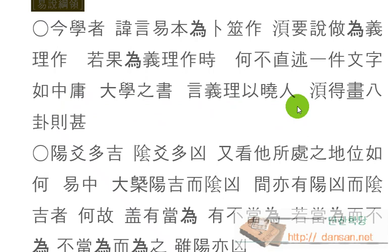수 등 획팔괴집심, 반드시 획팔괴, 팔괴 그은 것을 얻게 되게 한 것은 무슨 가닥이냐 이거에요. 그 얘기는 뭐냐면 주역은 본래 복서 때문에 지은 것이지, 이게 의리만을 설명하기 위해서 지은 글이 아니지 않느냐 이거에요. 그렇게 딱 이해를 하시면 돼요.